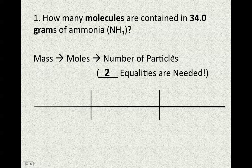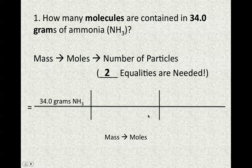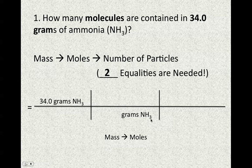Just like we did at the beginning of the year with dimensional analysis, we start with the value we're given: 34 grams of ammonia. Our first conversion factor goes from mass to moles. Whatever unit we start with goes in the denominator, so the GFM goes on the bottom and moles go on top. We need to add up the GFM of NH₃ — go back to concept A if you need help. We find that 17 grams of ammonia equals 1 mole of ammonia.